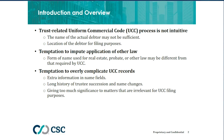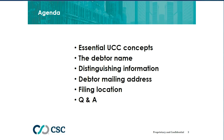What I'm going to do today is look at what is required and point out the kinds of errors commonly made in this process. I'll start by going through some essential UCC concepts important to understand in any Article 9 filing discussion. Then I'll move on to the debtor name, other filing requirements such as distinguishing information for certain trusts, the debtor mailing address when collateral is held in a trust, and where to file. At the very end, hopefully there will be some time for Q&A. If not, you can submit questions via the Q&A widget and we'll answer those we can't get to during the presentation offline afterwards.